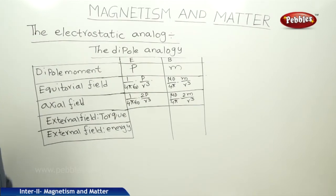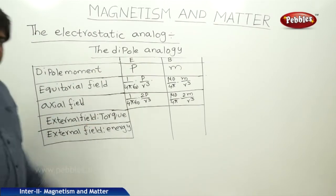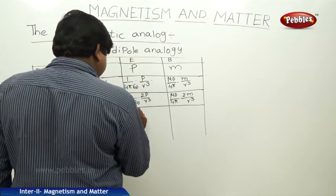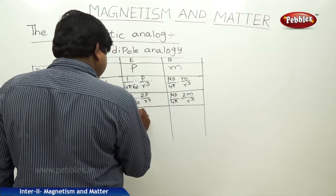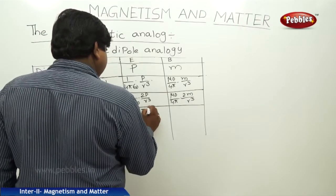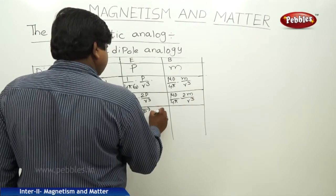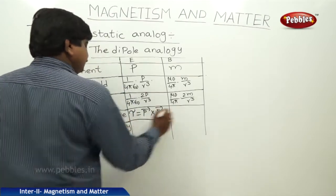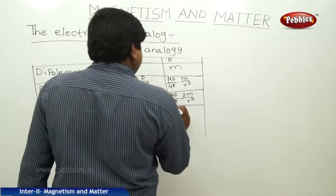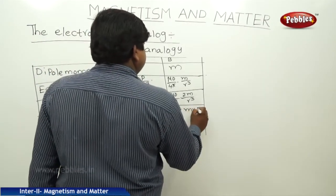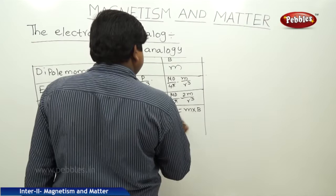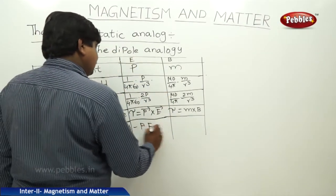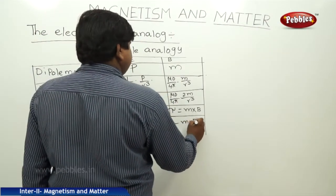For the external field, the torque in the electric field is P cross E, and in the magnetic field it is M cross B. The energy in the electric field is minus P dot E, and in the magnetic field it is minus M dot B.